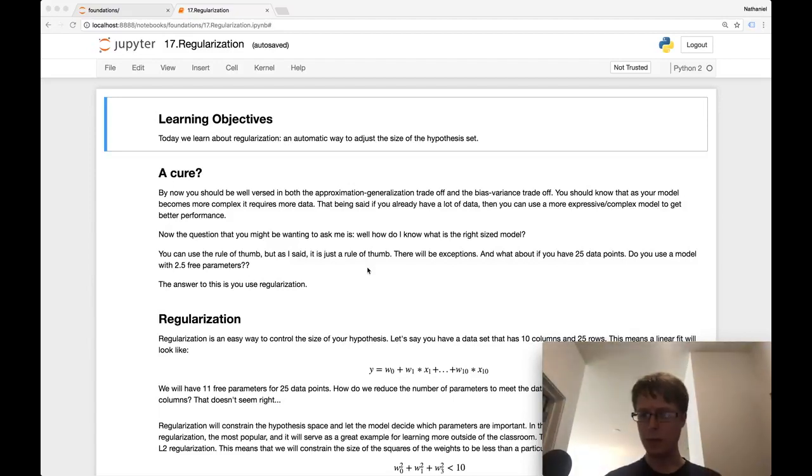We learned that there is a trade-off between bias and variance due to model complexity, noise, and the amount of data points in your sample.